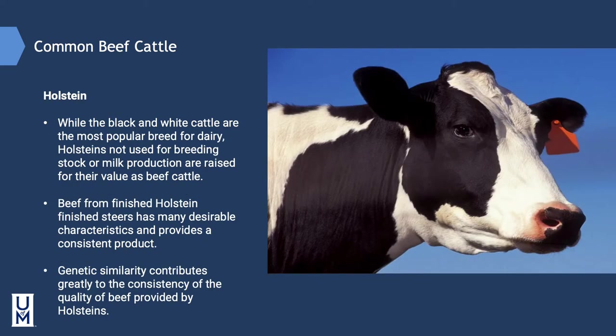Probably one of the most iconic cattle is the Holstein. While black and white cattle are the most popular breed for dairy, Holsteins not used for breeding stock or milk production are raised for their value as beef cattle as well. Beef from finished Holstein steers has many desirable characteristics and provides a consistent product. Genetic similarities contribute greatly to the consistency of the quality of beef provided by Holsteins.